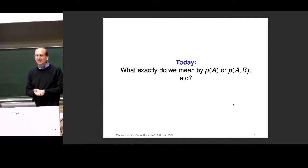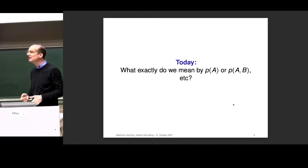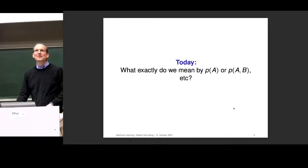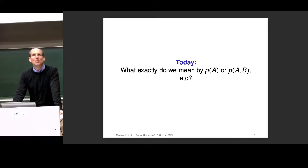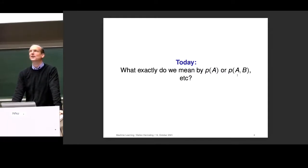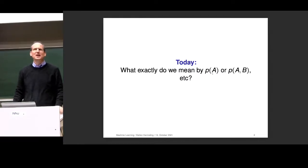Last time I said I want to explain what exactly we mean by P of A and P of A, B. This is weird notation when you switch on your mathematical brain, because typically if P is a function, how could it be once a function of one argument and then suddenly a function of two arguments? Also typically P of A is something else than P of B, which is also weird for mathematicians.